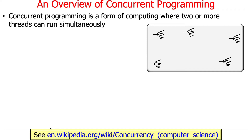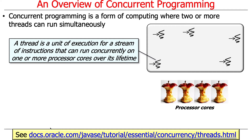Concurrent programming is a form of computing where two or more threads can run simultaneously. The squiggly lines with arrows denote threads, and the gray rounded angle denotes a process. A thread is a unit of execution for a stream of instructions that can run concurrently — meaning simultaneously — on one or more processor cores over the lifetime of the thread, from when it starts to when it exits and terminates.